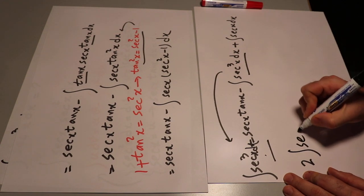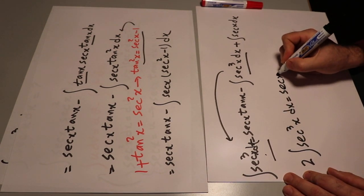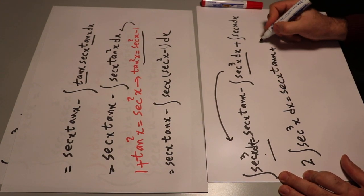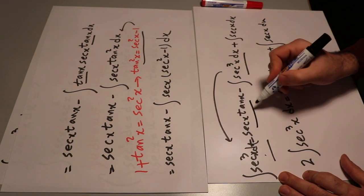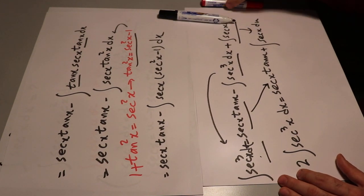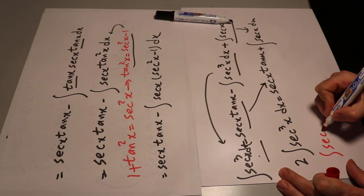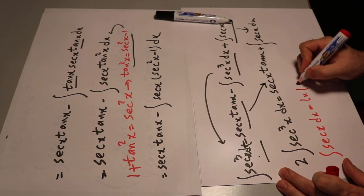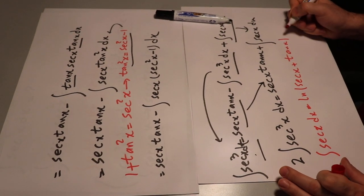Therefore, you will have 2 times the integral of secant³x dx equal to secant x tangent x plus the integral of secant x dx. And from a table of integrals we know that the integral of secant x dx is equal to ln |secant x plus tangent x|.